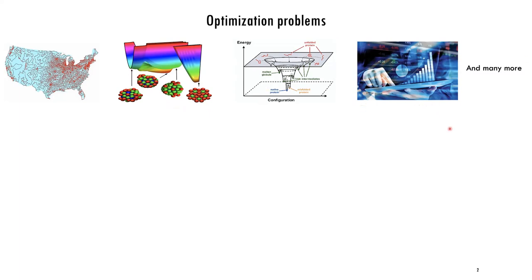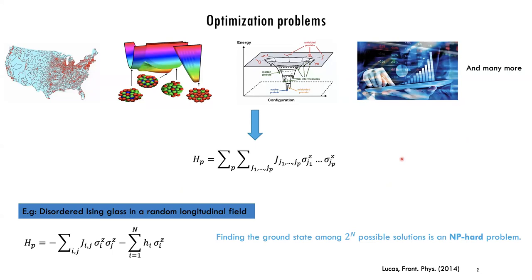Why are physicists interested in these problems, especially ones that don't seem directly physics-related like portfolio optimization? The reason is that most of these problems can be encoded in the form of a classical Ising model, where the coupling constants encode the specific kind of problem you're interested in. Solving this optimization problem simply means finding the ground state of this classical Ising model. But the catch is that for hard optimization problems — like spin glasses or the random field Ising model — finding the lowest energy state is actually NP-hard, so people have moved toward finding approximate low-energy states.